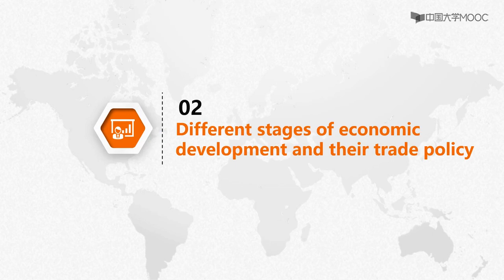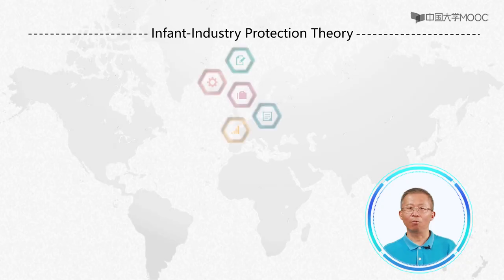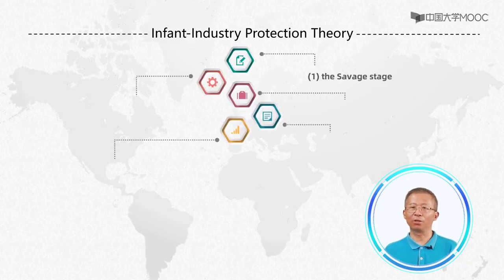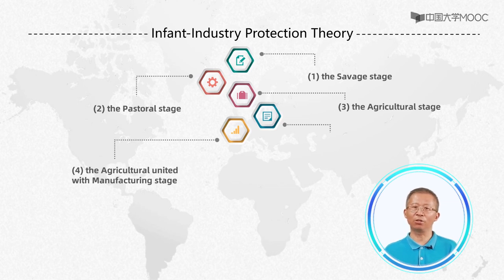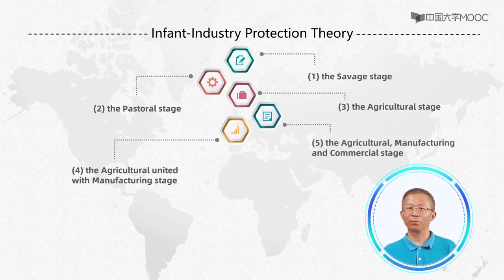Second, different stages of economic development and their trade policy. List examined the different stages of economic development through which countries naturally pass. These stages are: 1. The savage stage. 2. The pastoral stage. 3. The agricultural stage. 4. The agricultural united with manufacturing stage. 5. The commercial stage.